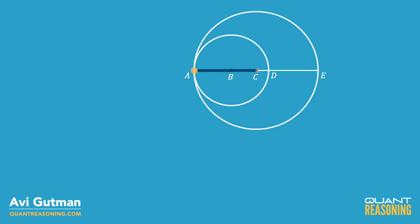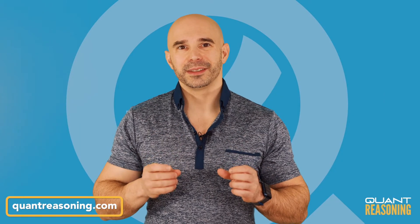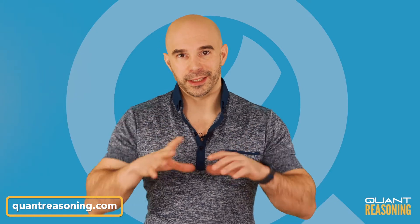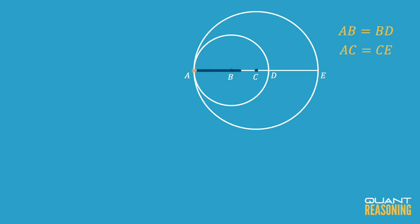We can say that AB equals BD because those are the two sides of the diameter of the small circle — radius equals radius. The left side radius is equal to the right side radius in the small circle. And separately, we can say that AC equals CE for the same reason, except this time looking at the large circle. The left radius equals the right radius.